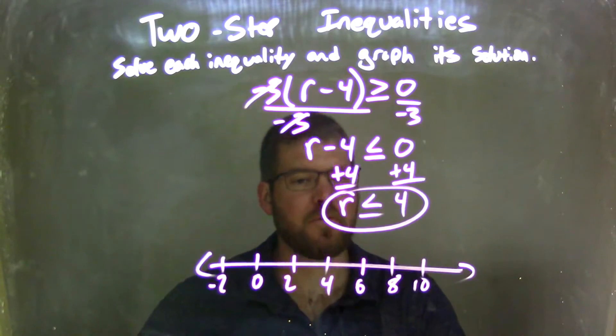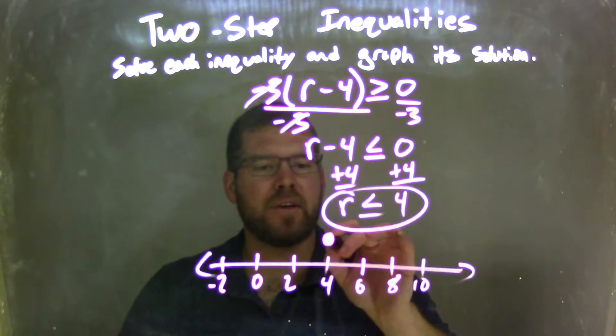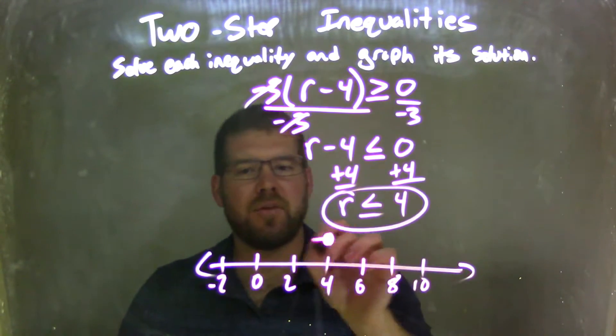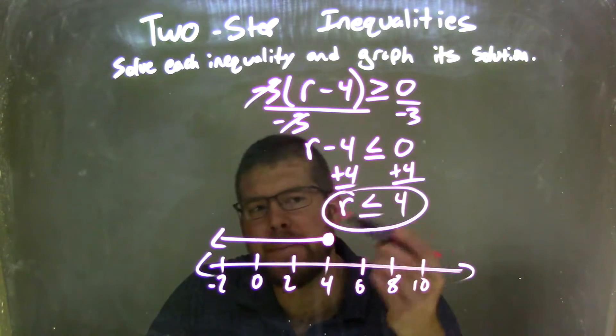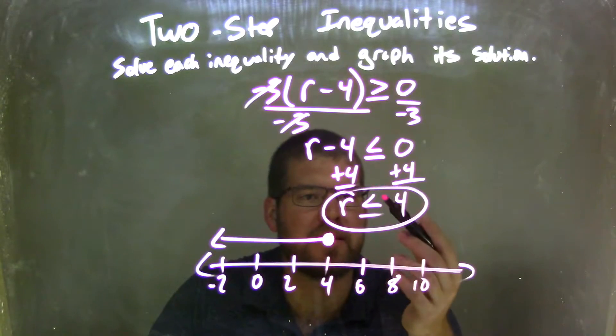We said r is less than or equal to 4. So we have a closed circle at 4 because it can equal 4. And it's less than, so I put my arrow to the left. And there we go. I have my graph that matches my inequality of r is less than or equal to 4.